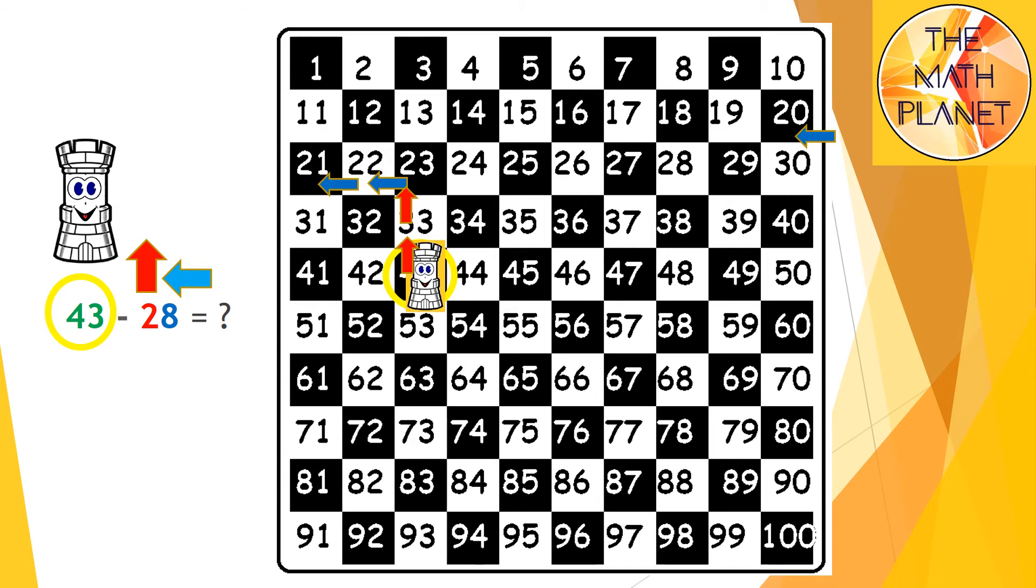But there are no numbers before, so I need to move to the previous row to continue. So before 21 is 20, so I will go to 20 and then 19, 18, 17, 16, and 15. And the destination point will be at number 15, which is the difference.